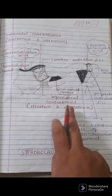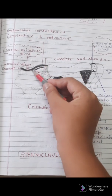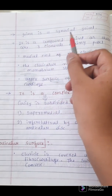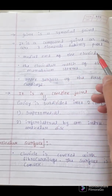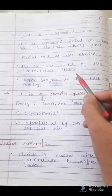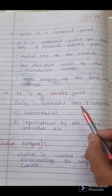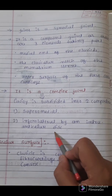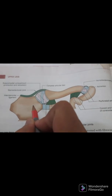Today's topic is the sternoclavicular joint — the joint between the sternum and clavicle. It is a synovial joint and a compound joint. Three elements take part: the medial end of the clavicle, the clavicular notch of the manubrium sterni, and the upper surface of the first costal cartilage. It is a complex joint; the joint cavity is subdivided into two components: supramedially and infralaterally by the intra-articular disc.